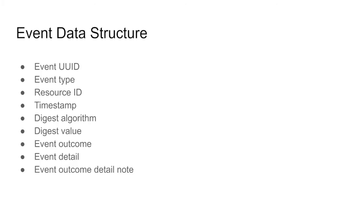The data structure is straightforward. You have the timestamp, algorithm value, and then some PREMIS-specific fields that record details and other information in case you want to use them for PREMIS serializations or any other purpose.